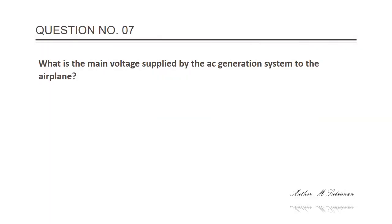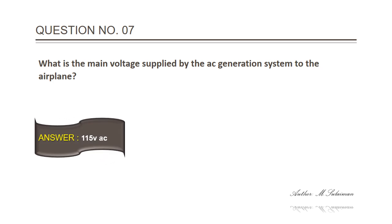Question 7: What is the main voltage applied by the AC generation system to the airplane? Answer: 115 volt AC.